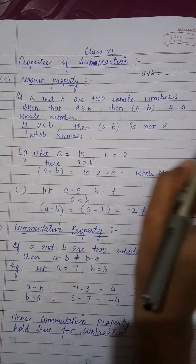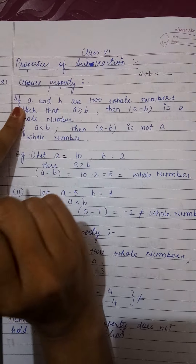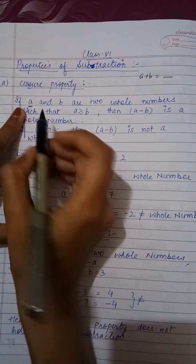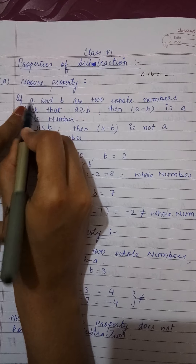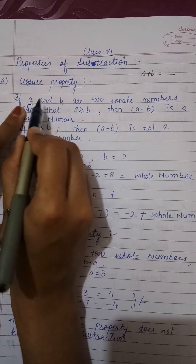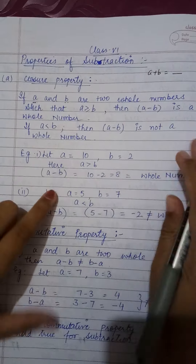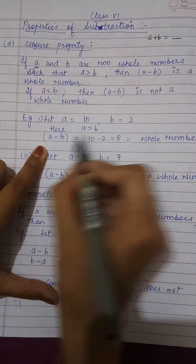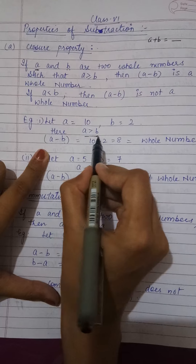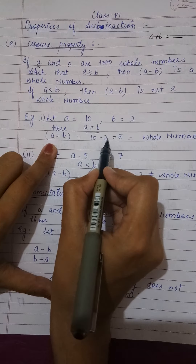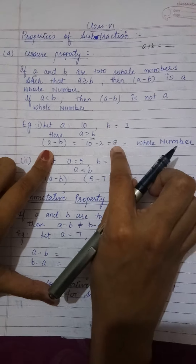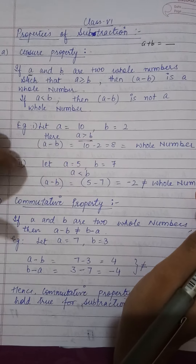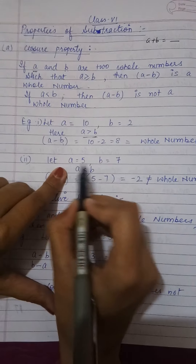They are saying: if we have taken any two whole numbers, and among these two whole numbers this a is either greater than b or equals to b. For example, if a is 10 and b is 2, then a is greater than b. So when I subtract it, I will be getting a whole number, and in this case closure property will satisfy. Closure property will not satisfy if a is less than b.